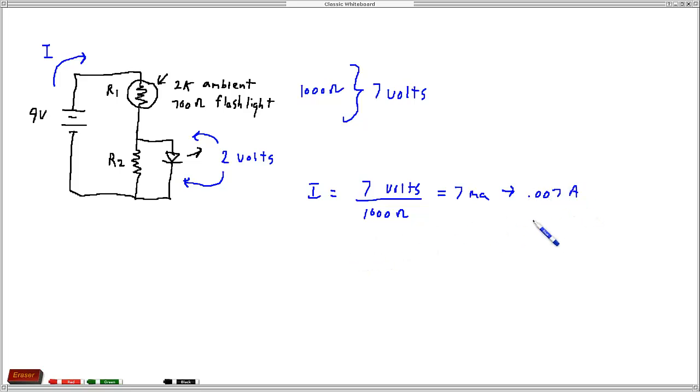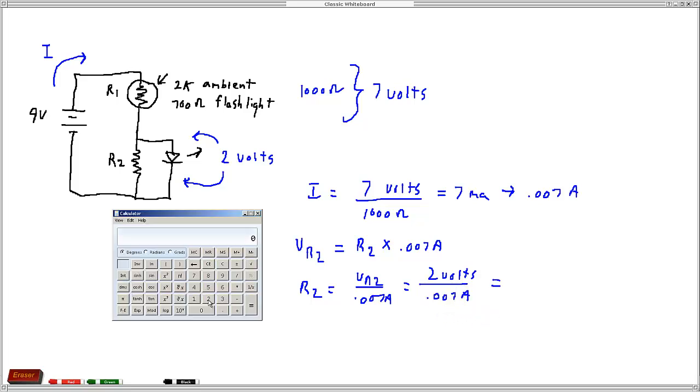Once we've found this current, we can use it to find the voltage across R2, because V_R2 equals R2 times 0.007 amps. Solving for R2: R2 equals V_R2 over 0.007 amps, which equals 2 volts divided by 0.007, giving us 286 ohms.